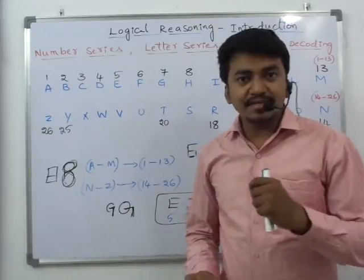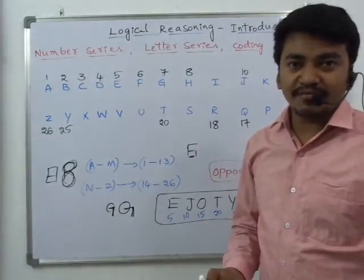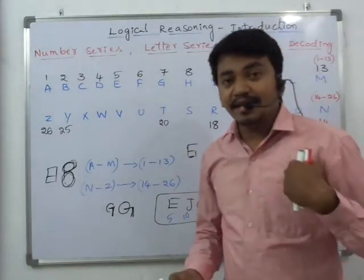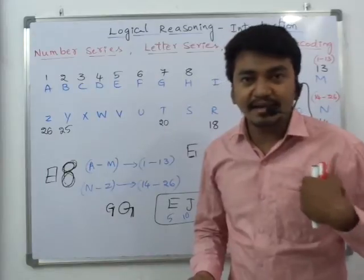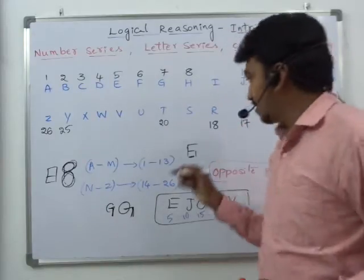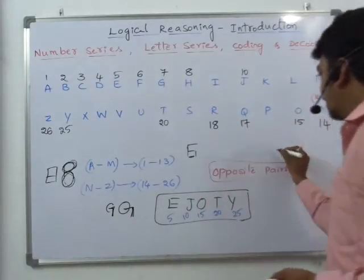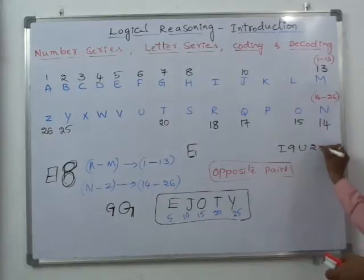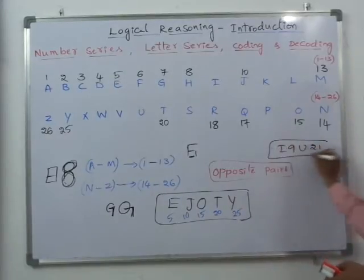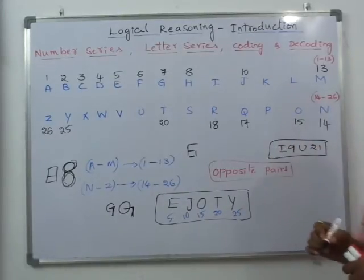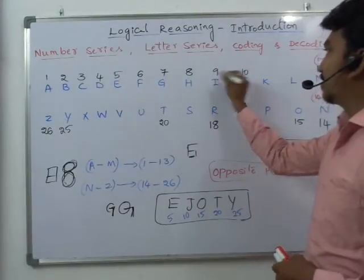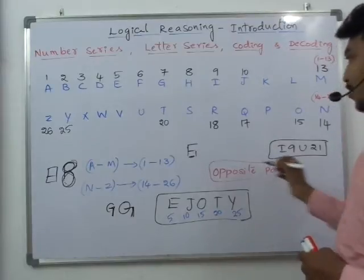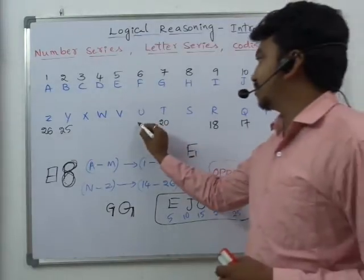Next, try to remember the phrase: I9, U21. When I say I, it should sound like 9 — so I9, U21. Remember it as a phrase: I9, U21. So the position of I is 9 and the position of U is 21.